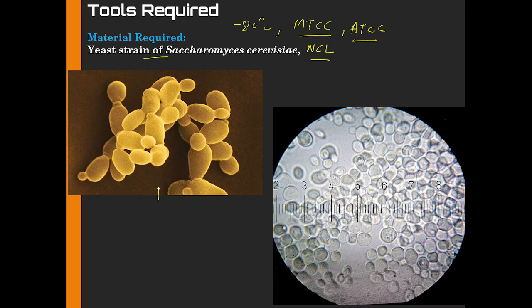The yeast cells look like this. As you can see, this is a cell and this is one of the daughter cells. Under a microscope it will look like something like this. They are oval in shape.